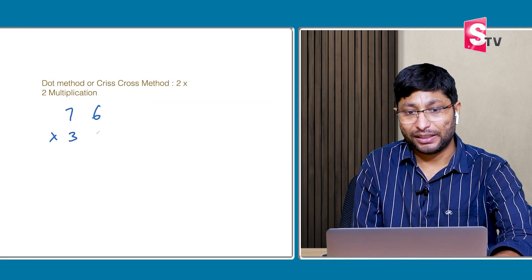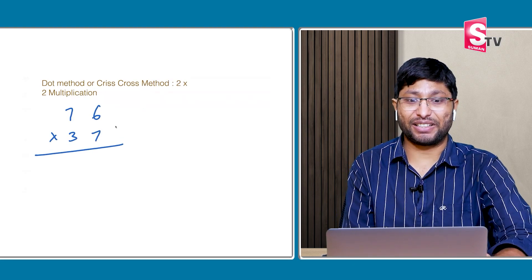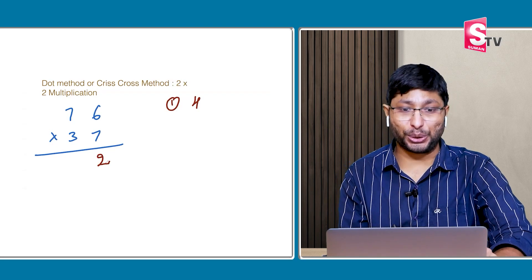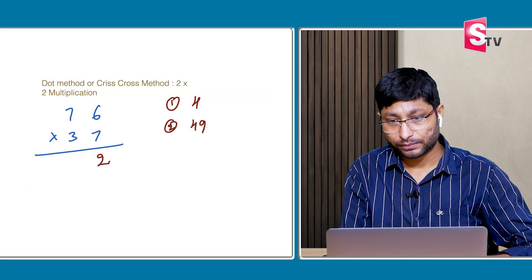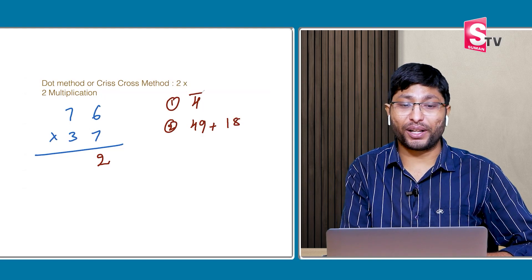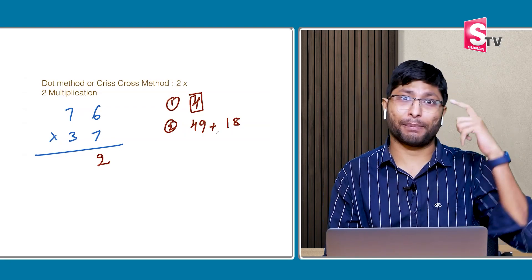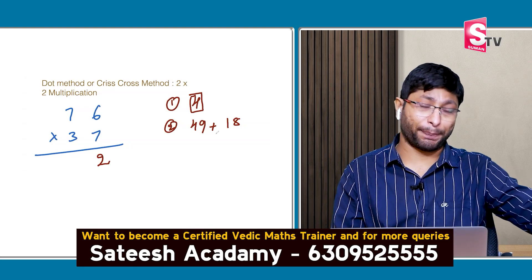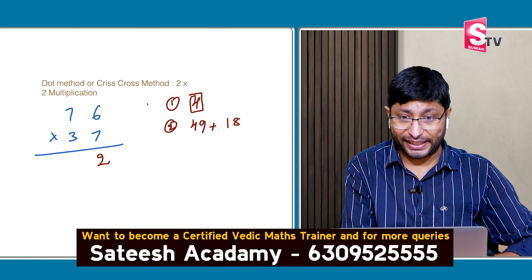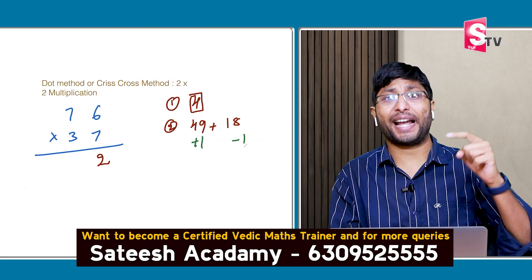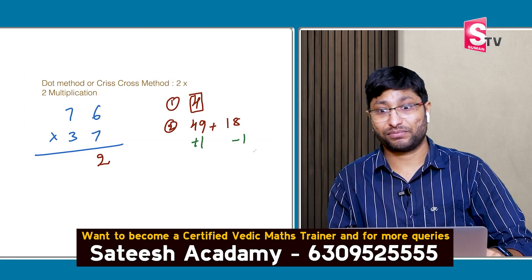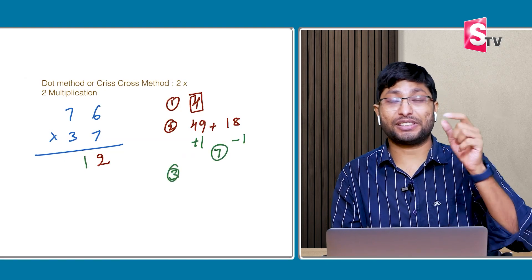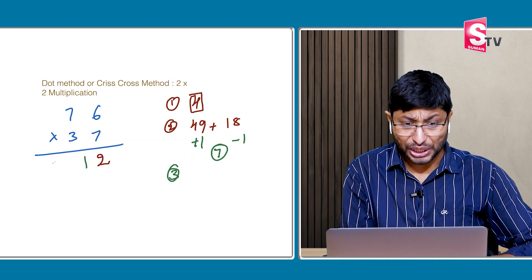76 × 37 — doing big numbers. Step 1: 6 × 7 = 42. Write down 2, carry 4. Step 2: compute cross products. Adding up gives 49 plus 18 = 71 — you can use Vedic maths addition concepts for this. Write down 1, and 7 will be carry. Step 3: 7 × 3 = 21. Plus 7 = 28. The answer is 2812.